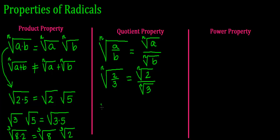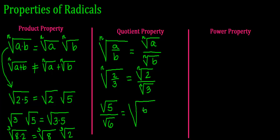If I have the square root of 5 over the square root of 6, the quotient property also works backwards. I can join them and have a root of a quotient — the square root of 5 over 6.